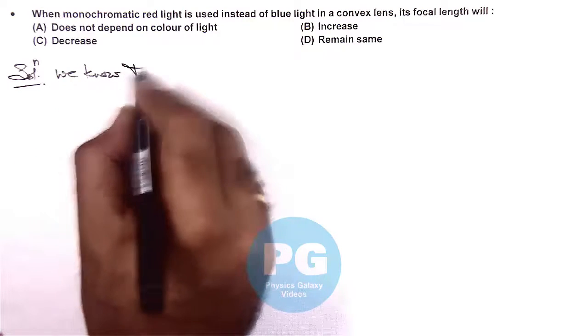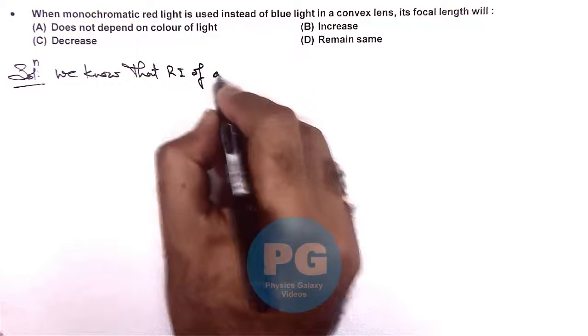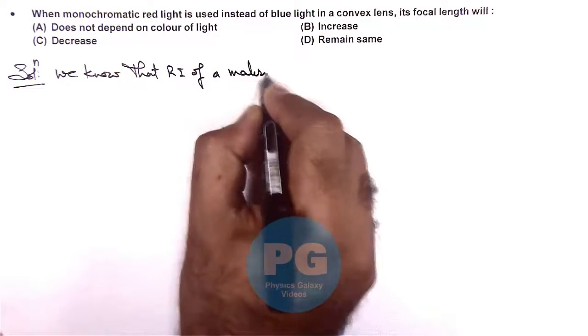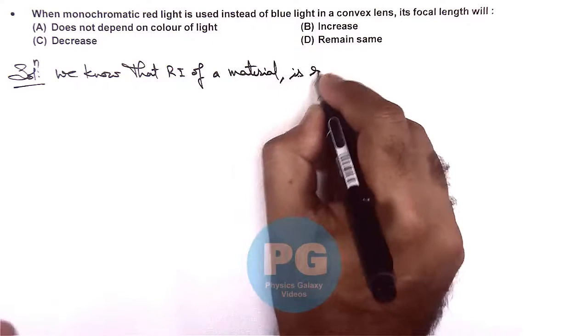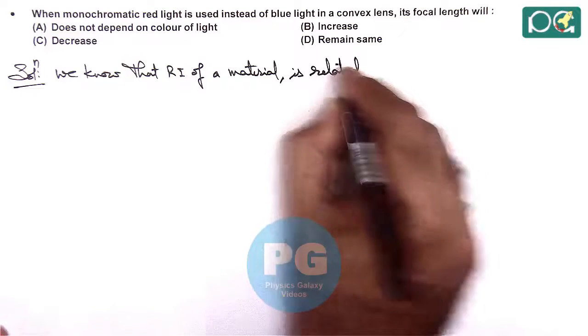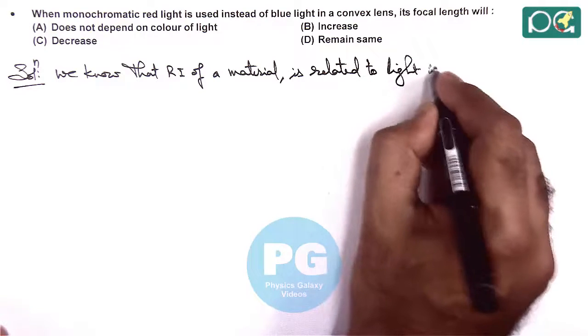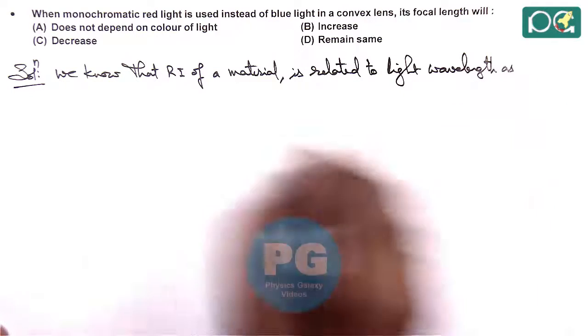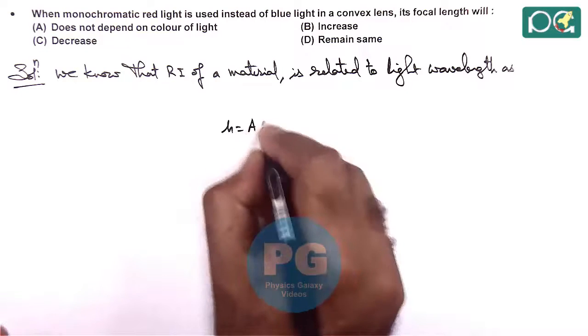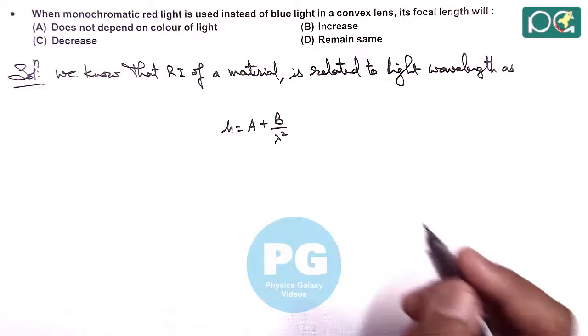We know that refractive index of a material is related to light wavelength as: μ = A + B/λ². That's Cauchy's relation we already discussed.